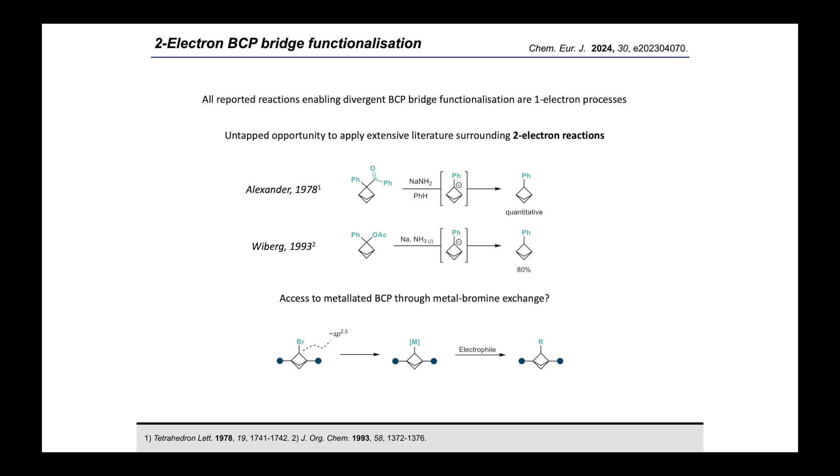We therefore questioned whether metal-halogen exchange from a bridge monobromide, now that this motif was relatively accessible, would be viable. Importantly, we realized that if we could generate a reactive bridge organometallic species, then a whole range of previously unexplored chemistry could then become accessible.